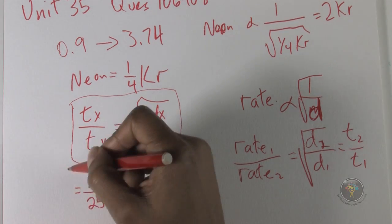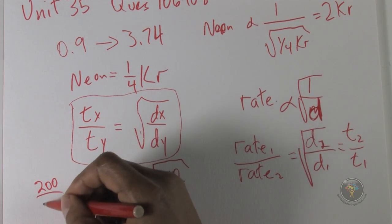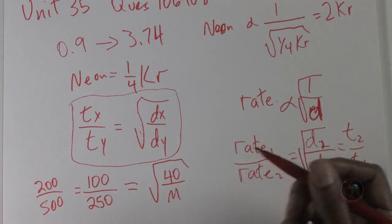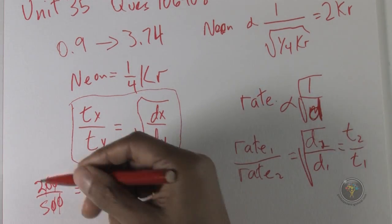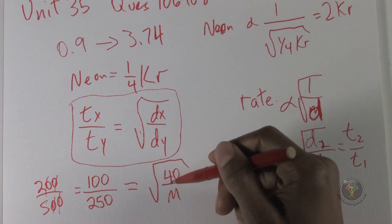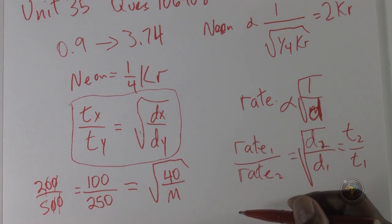And the other one is the molecular mass we don't know. So 100 over 250 is the same thing as saying 200 over 500, and that's of course the same thing as just saying two over five.